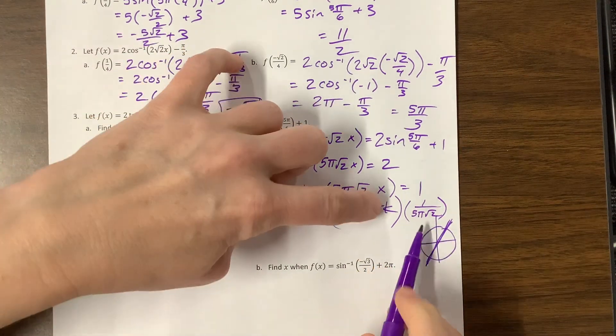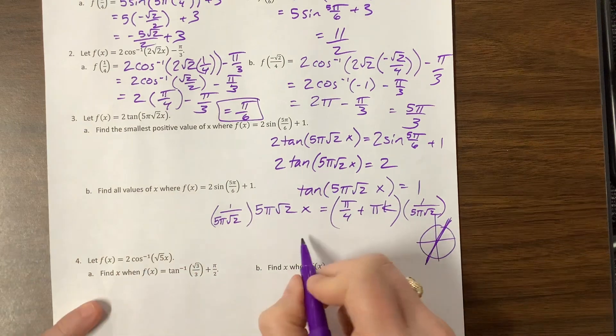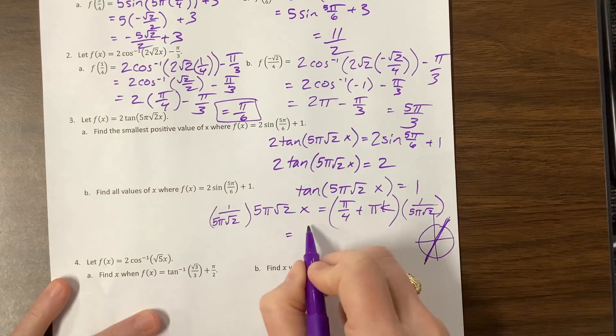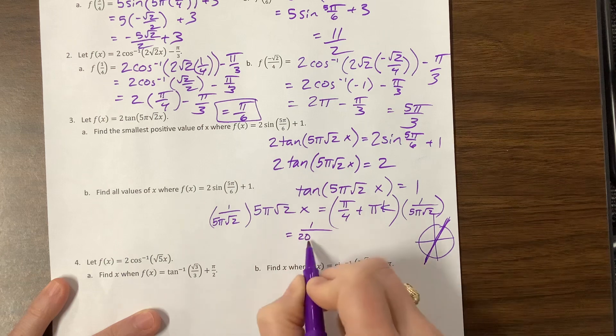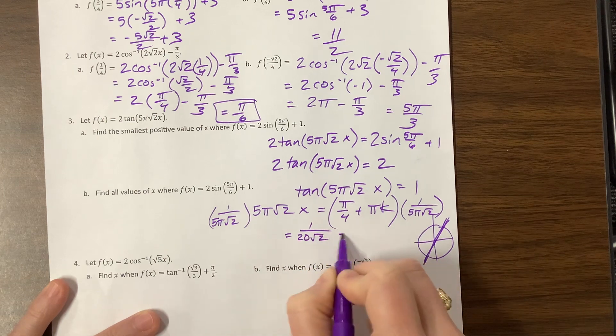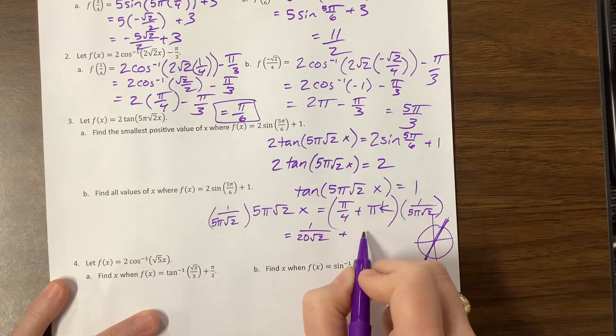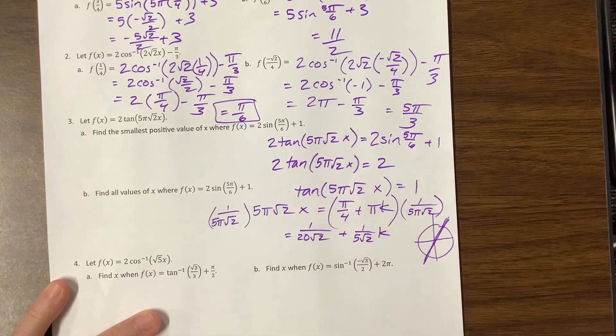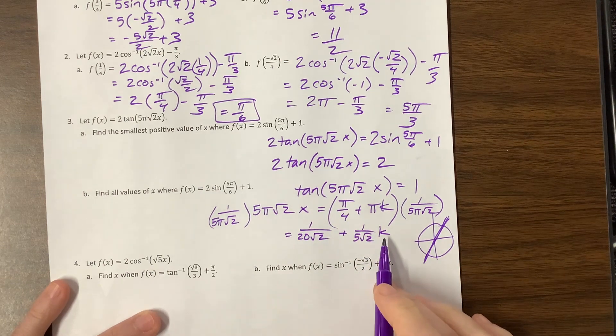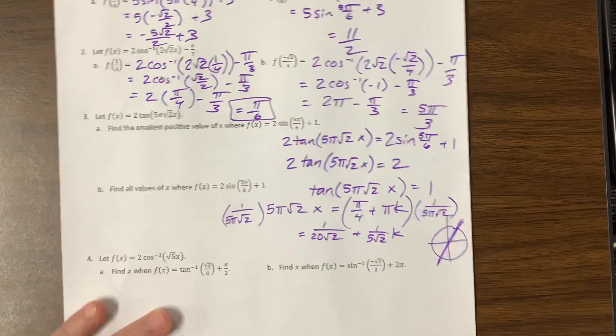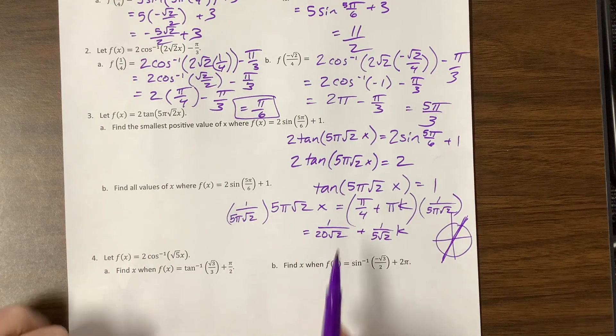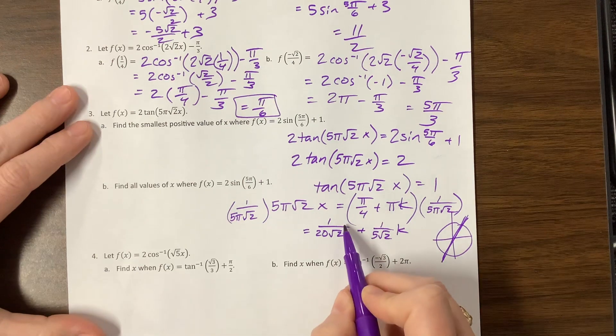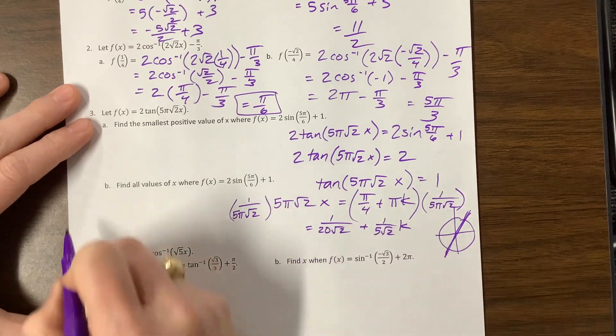The π's cancel on both of these terms, which is convenient. And I get 1 over 20√2 plus 1 over 5√2 times that k value, where k is an element of the integers. I think they do want us to rationalize our denominator, just in case. Let's practice. I can multiply by √2 over √2.